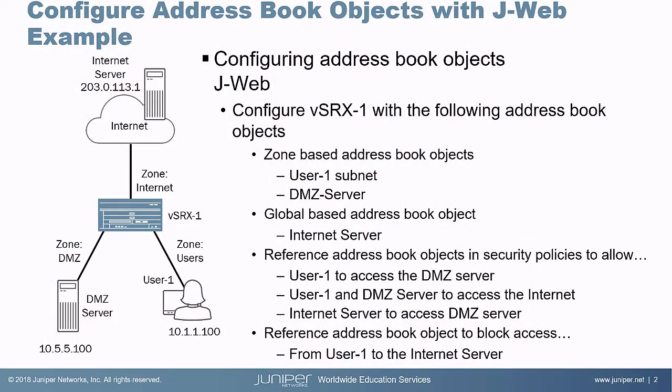Here's the example network. We have the VSRX1 device in the middle — that's the device we're going to be configuring. We have the DMZ server that is part of the DMZ zone. Make note of that IP address because we'll reference it in an address book entry. Then we have the users zone which has user1 — that IP address is important as well. And we have the internet zone, with the internet server as part of it, whose IP address we'll also use.